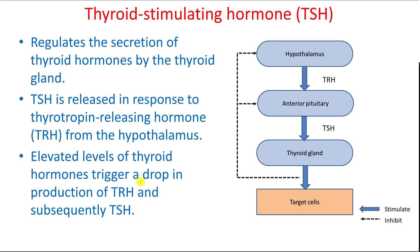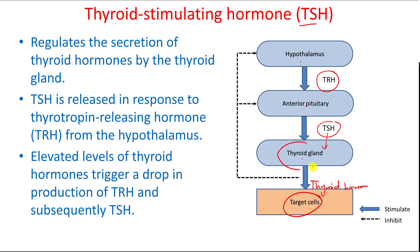The other hormone from the anterior pituitary gland is TSH — the thyroid stimulating hormone. Under the hypothalamus, the hypothalamus secretes thyrotropin-releasing hormone, which targets the anterior pituitary. The anterior pituitary then releases TSH, which targets the thyroid gland to release thyroid hormone, which has its own target cells. This is also a negative feedback mechanism.